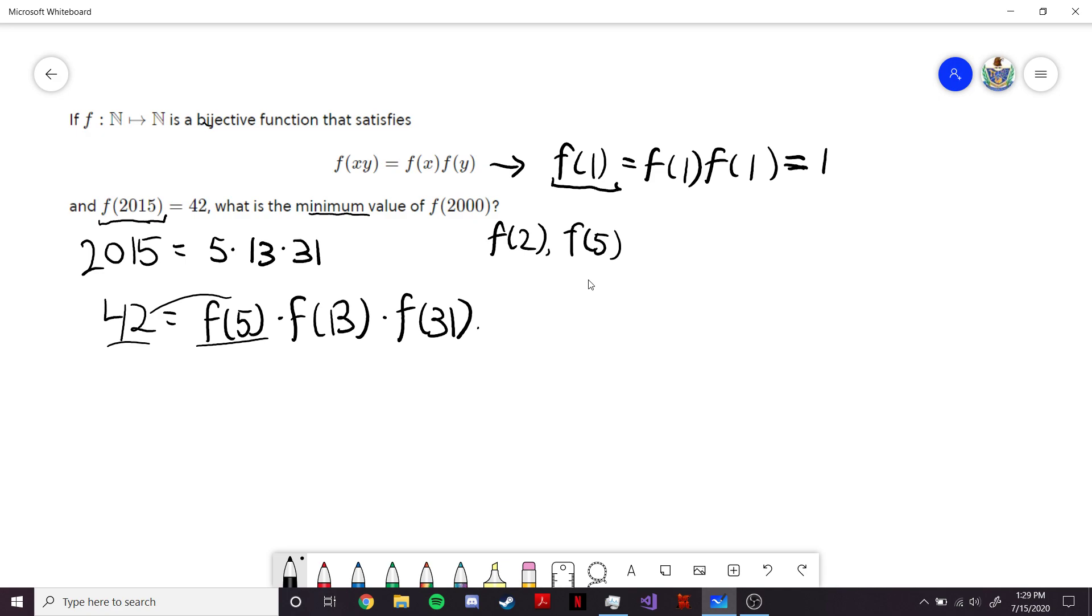And since f is bijective, that means no other natural number can map to 1. So f(5) can't be equal to 1. And then, the next smallest choice would be f(5) is equal to 2. And this is a perfectly valid choice.